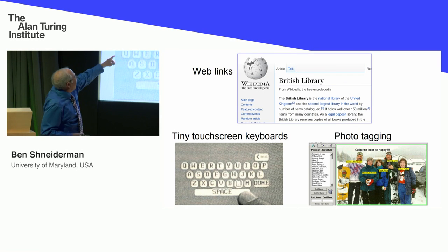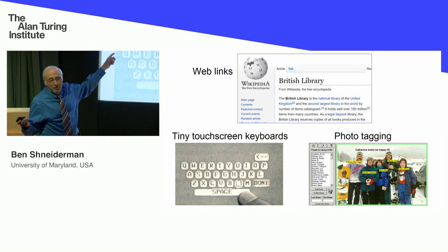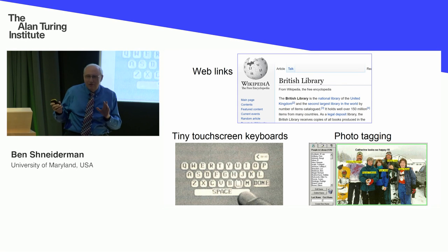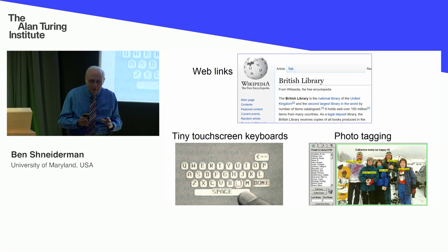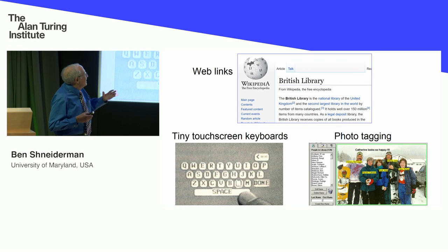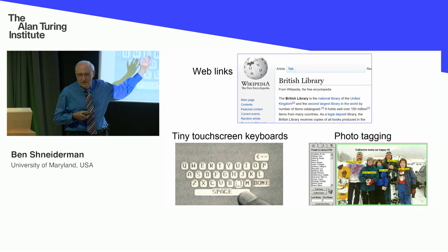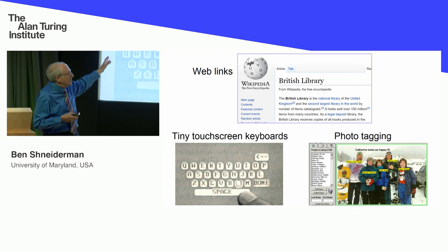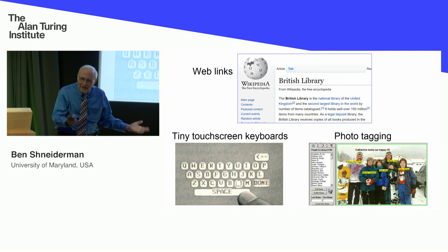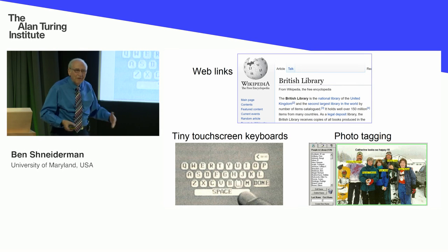I chose this little segment from Wikipedia about the British Library — you can see some highlighted words: National Library, United Kingdom, second largest library in the world. Those light blue were the colors we chose in 1984-85 in designing early hypertext systems on a single computer. We produced the first electronic book, Hypertext on Hypertext, that's in the U.S. Library of Congress. Tim Berners-Lee in his Spring 89 Manifesto for the Web cited that work.